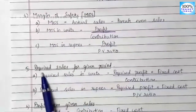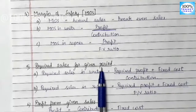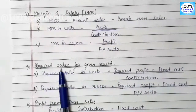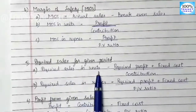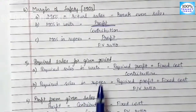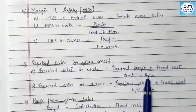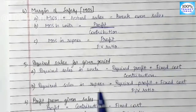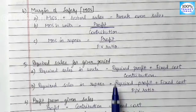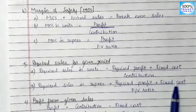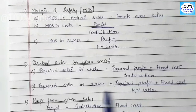The next topic is required sales for a given profit. Required sales in units equals Required Profit plus Fixed Cost, divided by Contribution per unit. In rupees, it is Required Profit plus Fixed Cost, divided by PV ratio — the denominator changes between units and rupees.